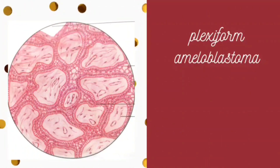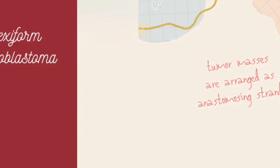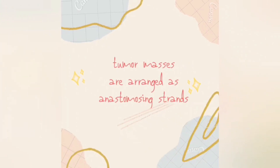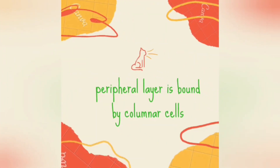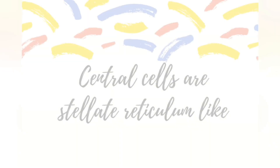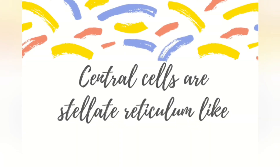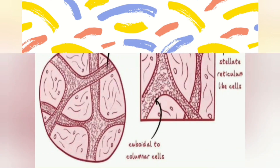The next type is plexiform ameloblastoma. In plexiform ameloblastoma, tumor masses are arranged as anastomosing strands. The peripheral cells are columnar cells and the central cells are stellate reticulum type of cells.